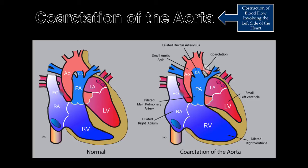While coarctation of the aorta is suspected in utero by significant disproportion between the right and left atrial and ventricular chambers, a definitive diagnosis is not made until after delivery when the ductus arteriosus has closed. Therefore, in most cases, the diagnosis must await neonatal confirmation using echocardiography.